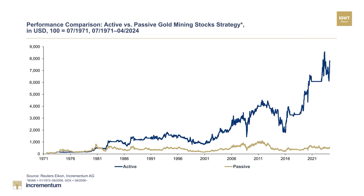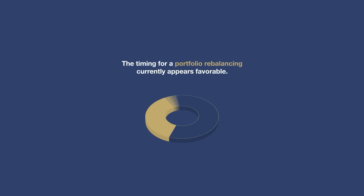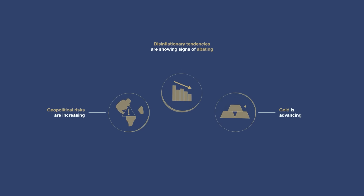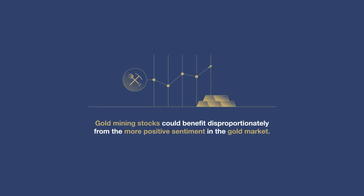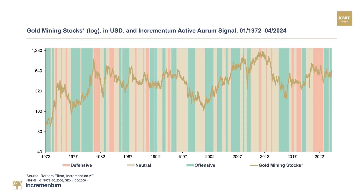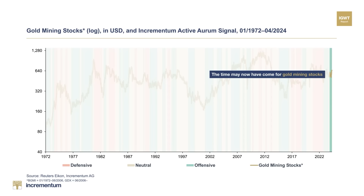While a passive strategy has achieved a performance of around 470% since 1971, our Incrementum Active RM Signal strategy achieved a performance of over 7,000%. The timing for a portfolio rebalancing currently appears favorable. Disinflationary tendencies are showing signs of abating, while geopolitical risks are increasing, and gold is advancing with a strong tailwind after its breakout. As performance gold, gold mining stocks could benefit disproportionately from the more positive sentiment in the gold market. The Incrementum Active RM Signal also shows that the time may now have come for gold mining stocks.